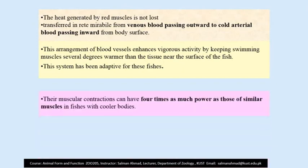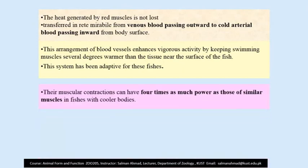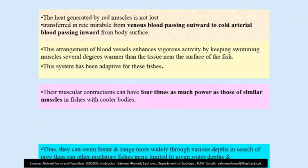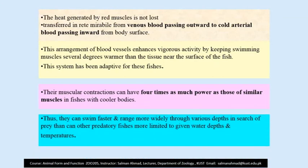This is a special adaptation of these fishes. Their muscular contractions can have four times as much power as those of similar muscles in fish with colder bodies. Thus they can swim faster and range more widely through various depths in search of prey compared to other predatory fishes.